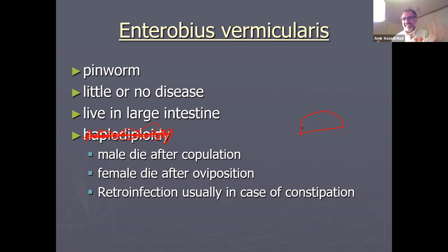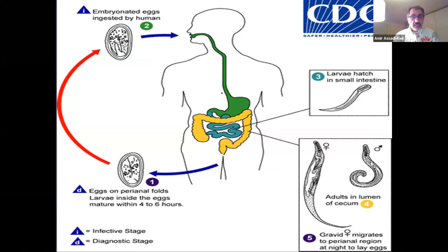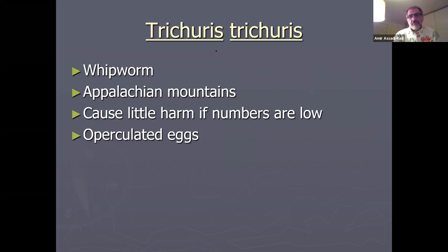Here are the eggs — unique and easy to distinguish. The posterior end of the animal is pointed. Here is the life cycle from CDC — it is direct, no intermediate host needed. Here is a pinworm filled with eggs. Not many parasites complete their life cycle entirely inside the host, but this is one of them.